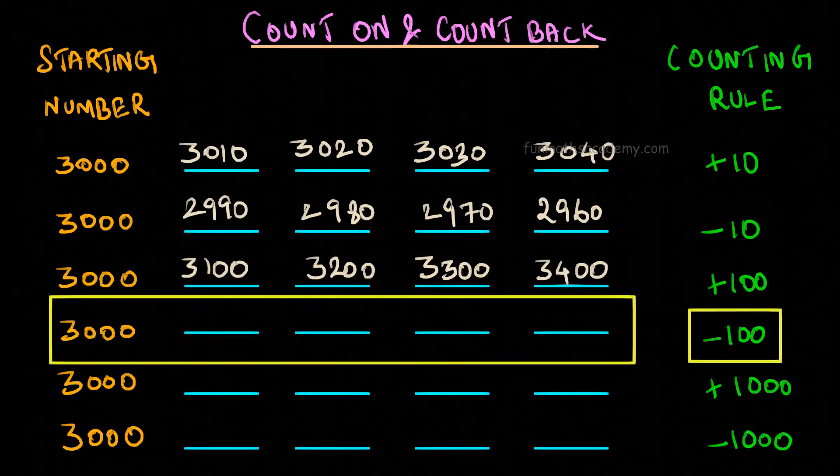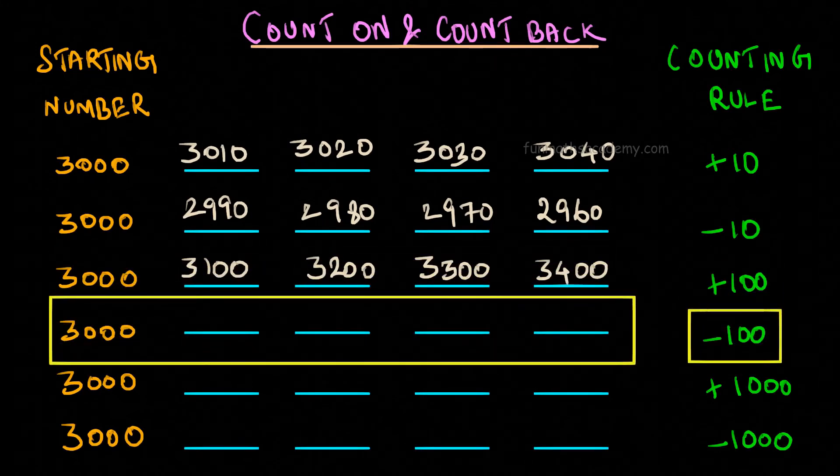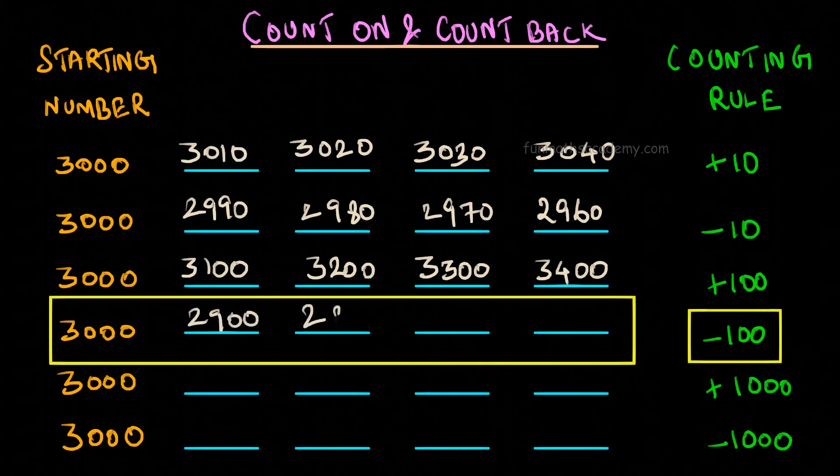When counting rule is minus 100, we will get 3000, 2900, 2800, 2700, 2600.